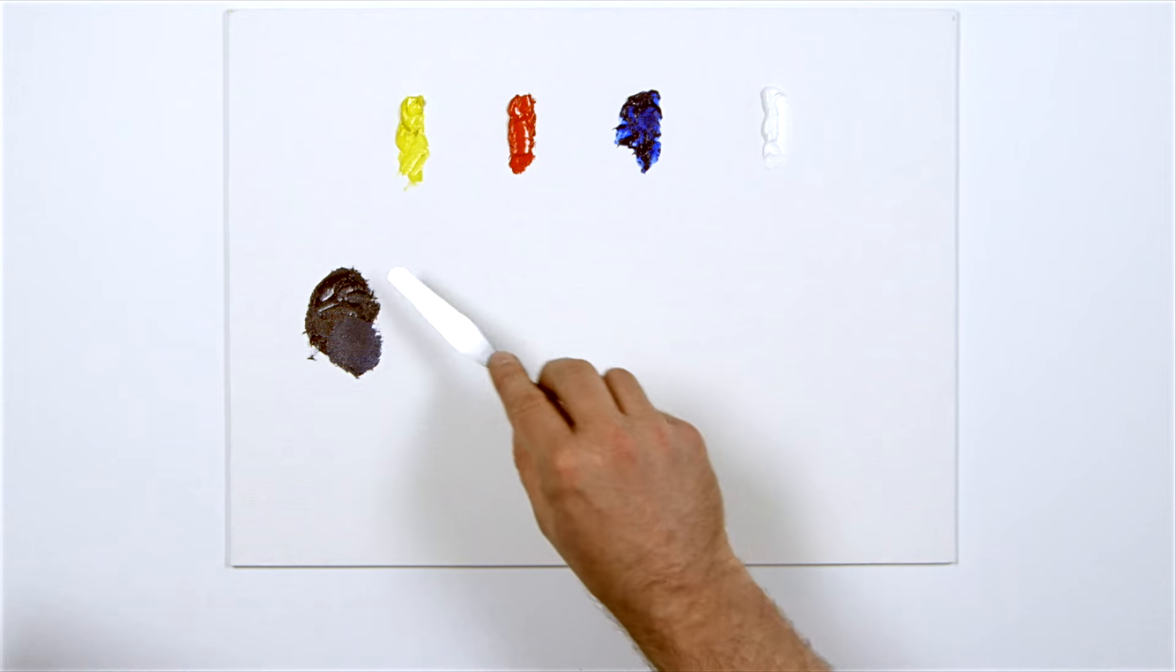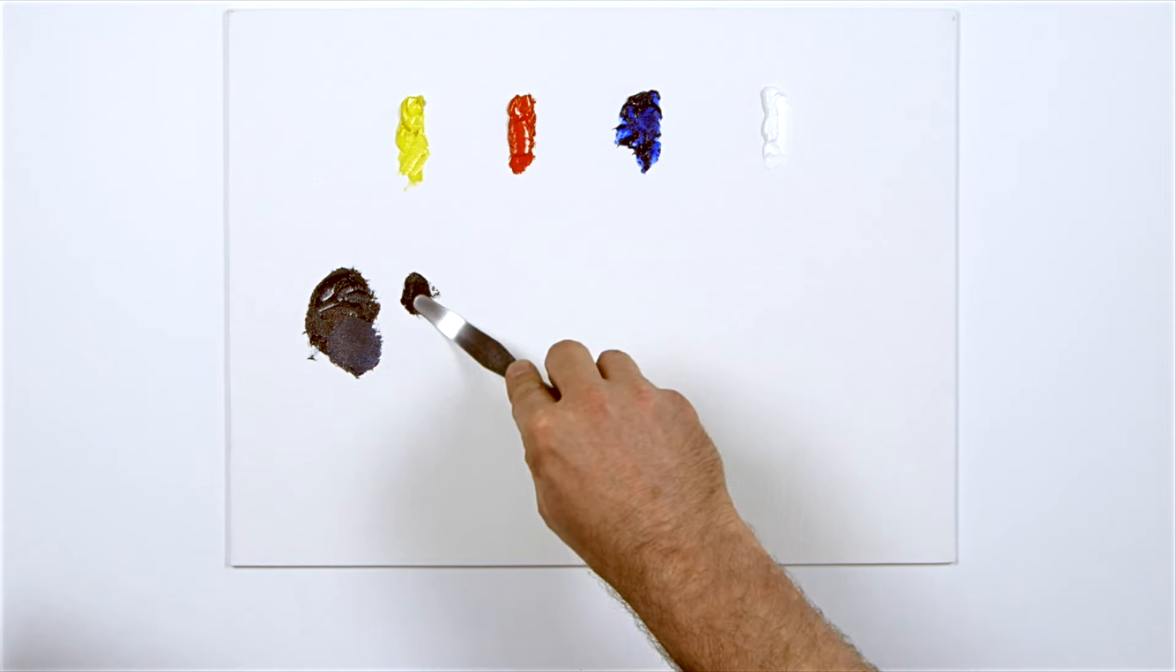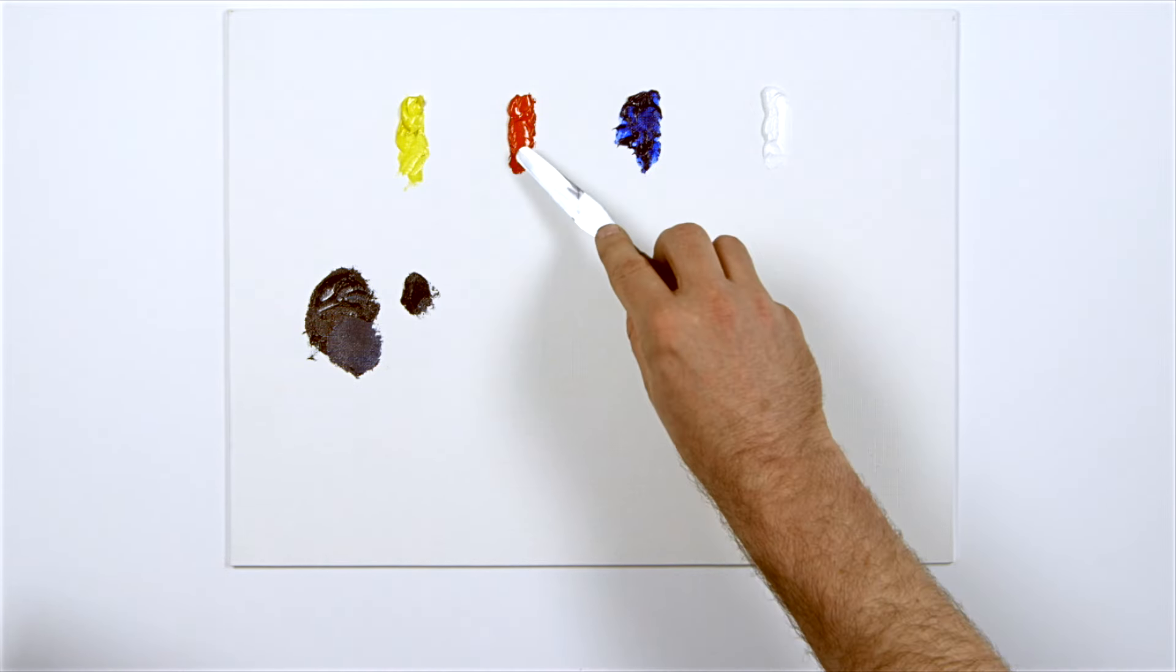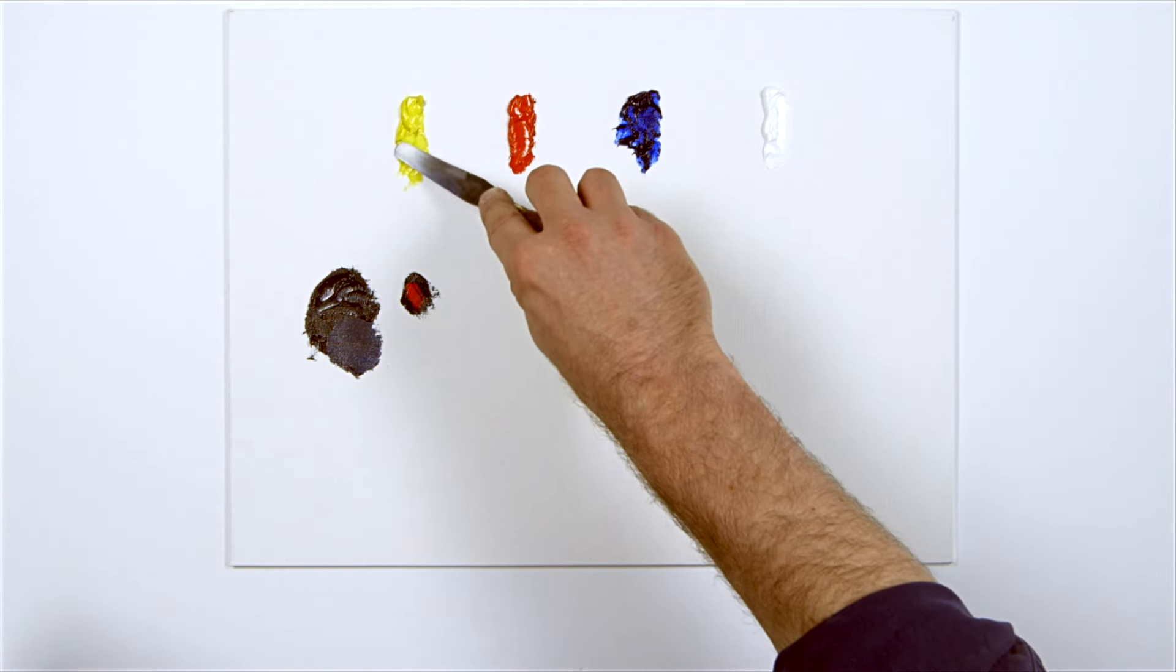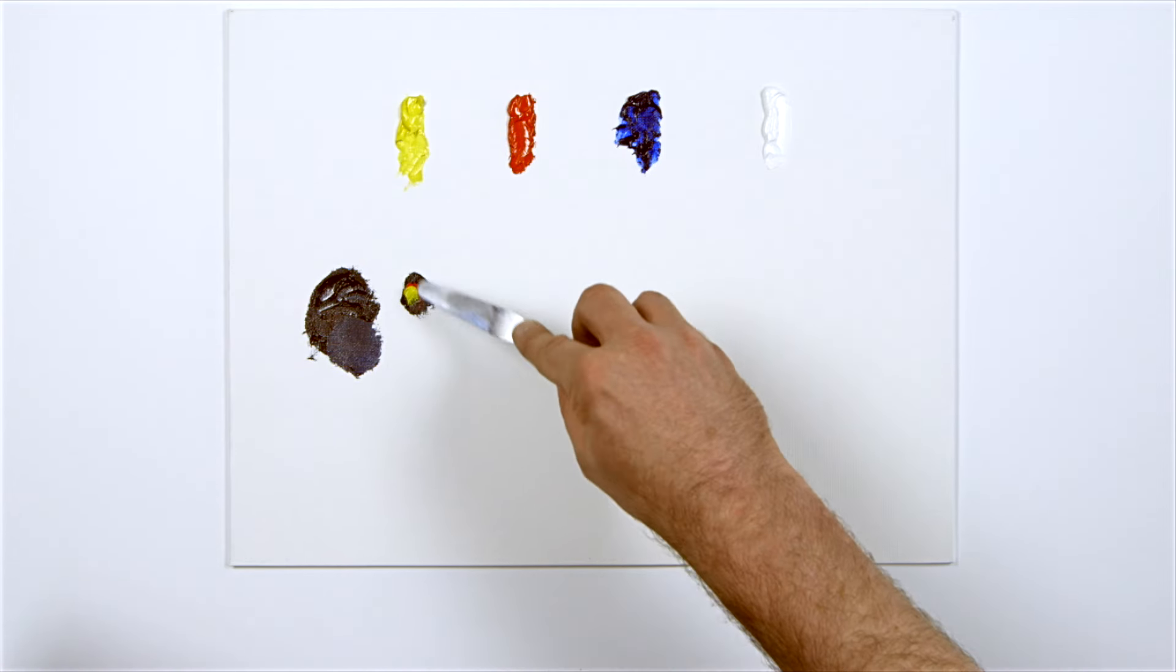From this point I can divide the mixture up and experiment. Adding yellow and red to the mix will push it towards brown.